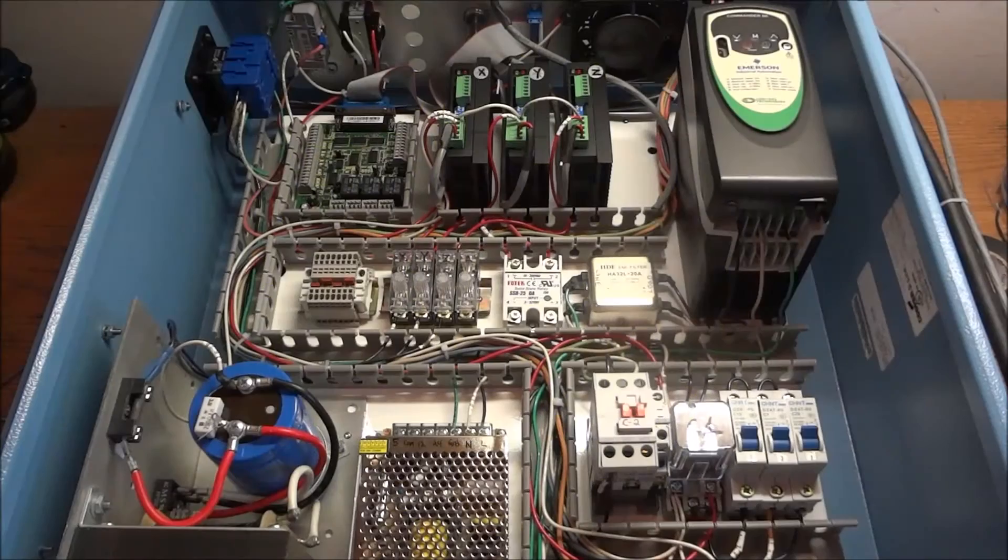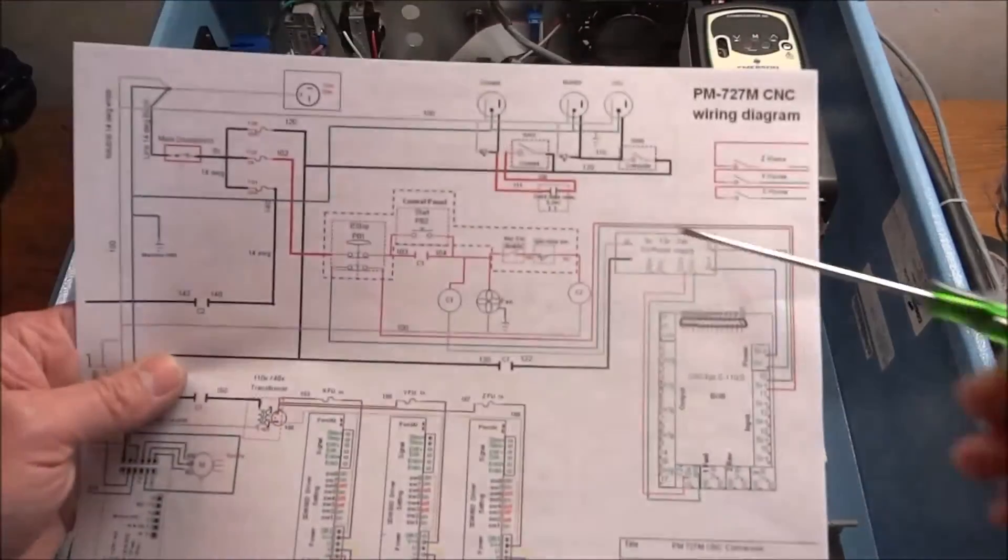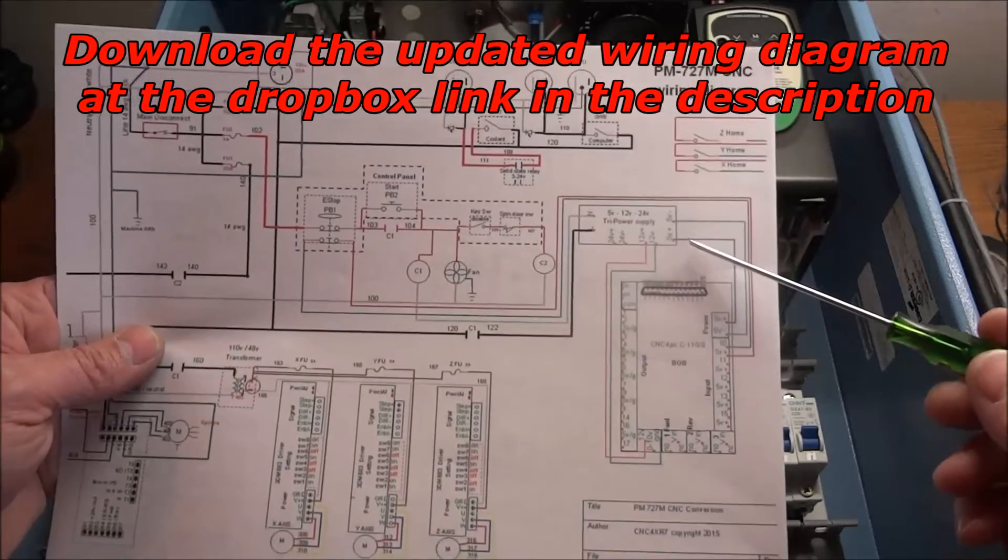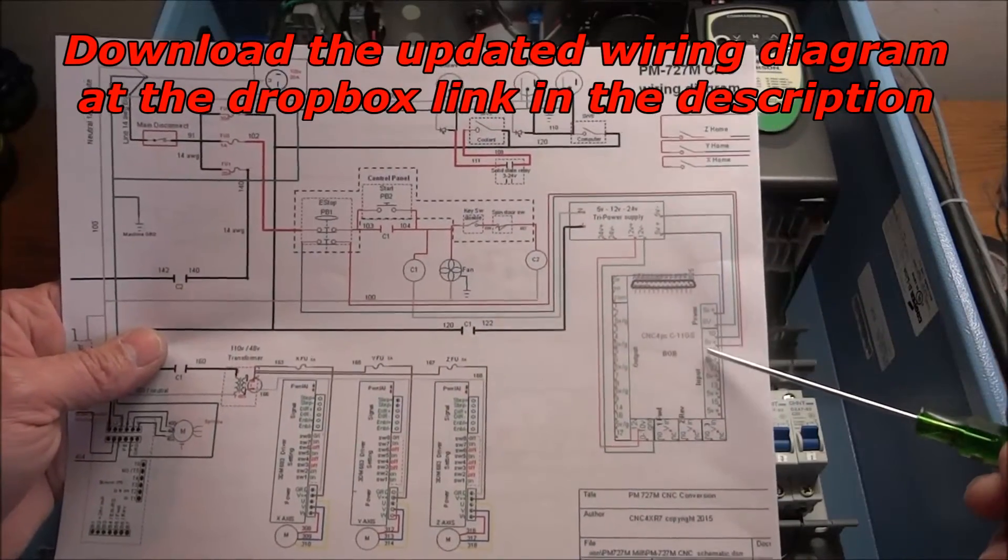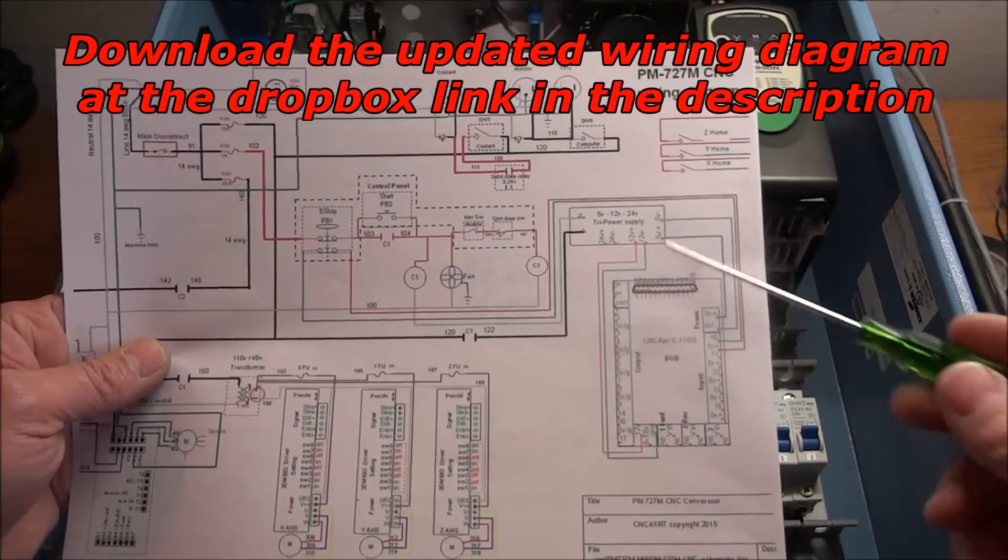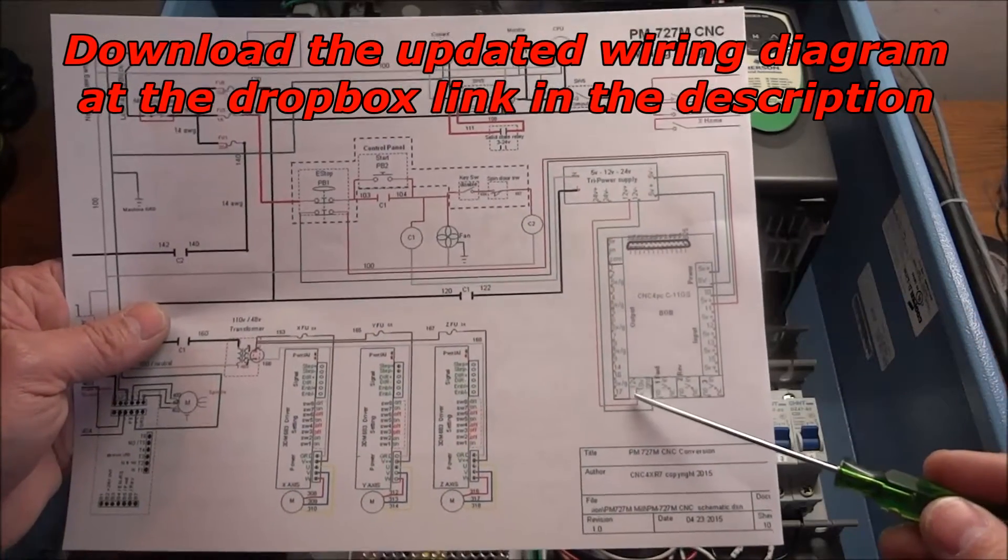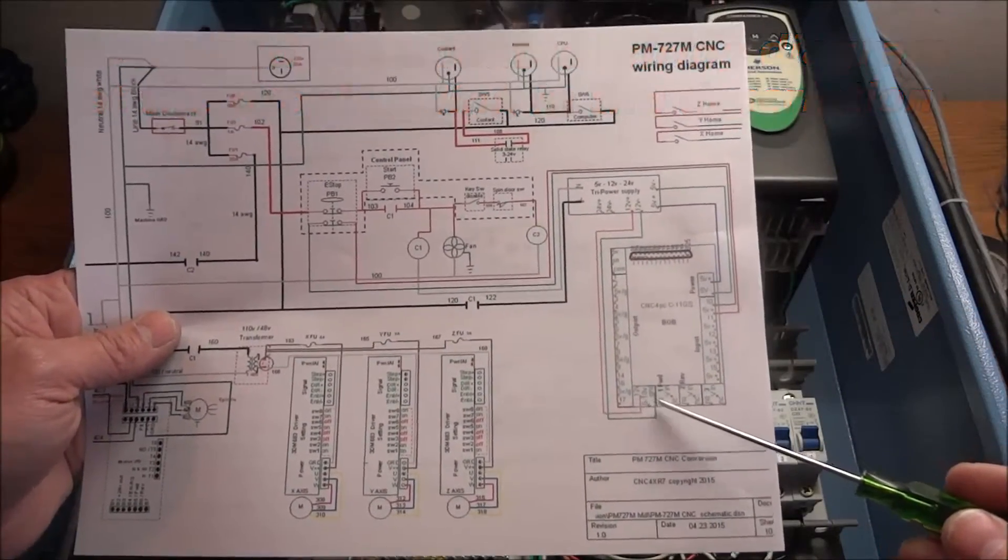Alright, so in this video we're going to wire up our TriPower power supply. Basically we're going to run 5 volts over to our C11GS and we're also going to run 12 volts over to our C11GS. This 12 volts is for our spindle control.